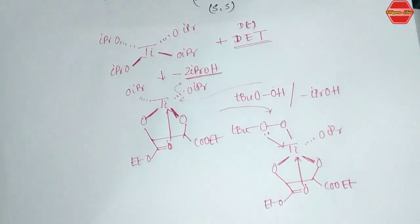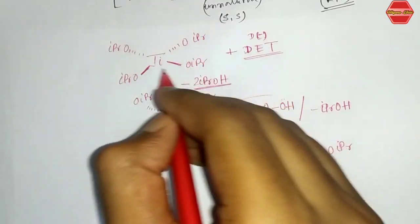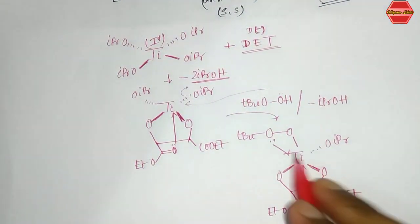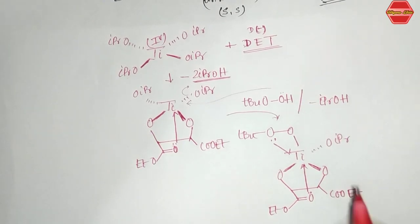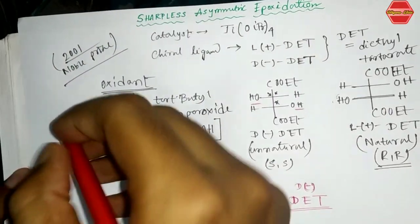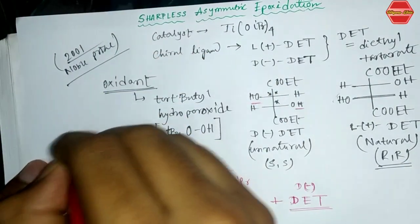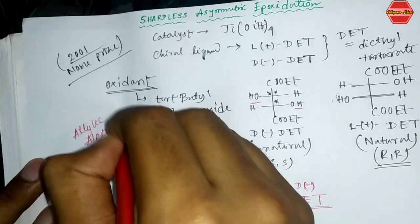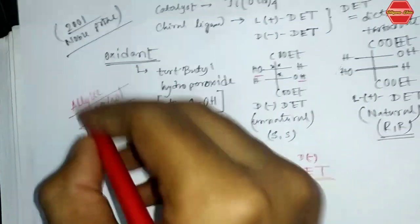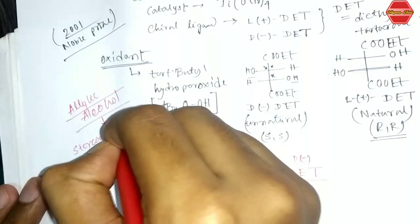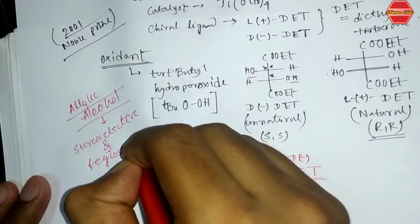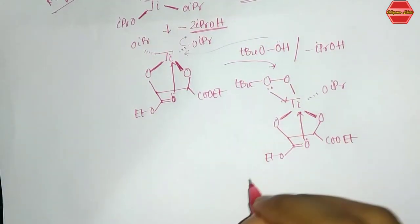The titanium center in the isopropoxide complex is in the +4 oxidation state, and upon TBHP coordination it goes to +6 oxidation state. Importantly, Sharpless asymmetric epoxidation is specific to allylic alcohols only, which makes this reaction both stereoselective and regioselective.